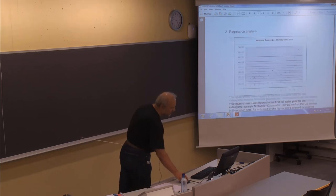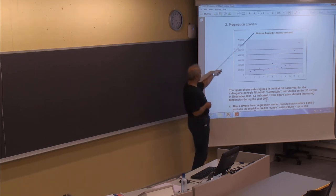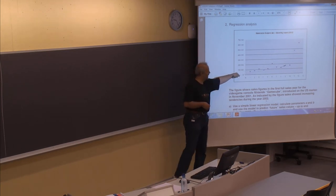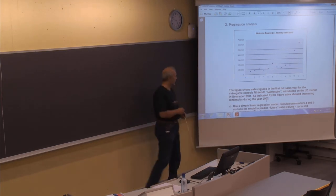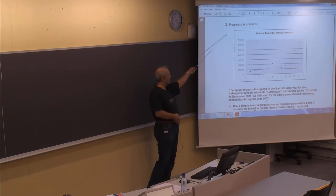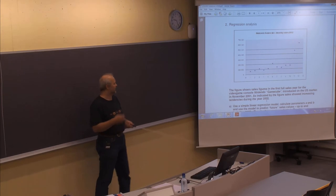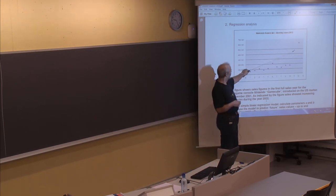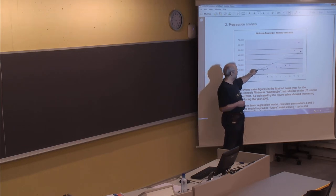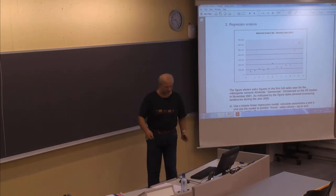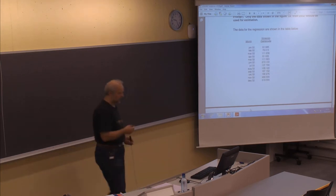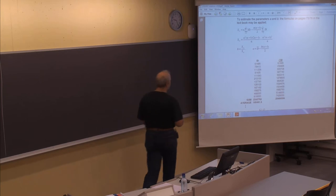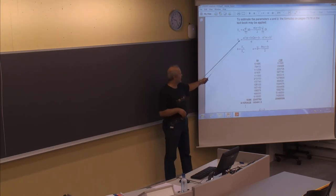Problem 2 was about regression analysis. We were given the problem about sales of Nintendo GameCube in 2002. We saw quite stable sales for the first 10 months, and then in November and December a quite large increase in demand. Regression analysis can be used as a forecasting method for trend-based series. We need to find the SXY and SXX parameters, which then allow us to find the gradient — the B value — indicating how much the trend line increases from one period to the next.